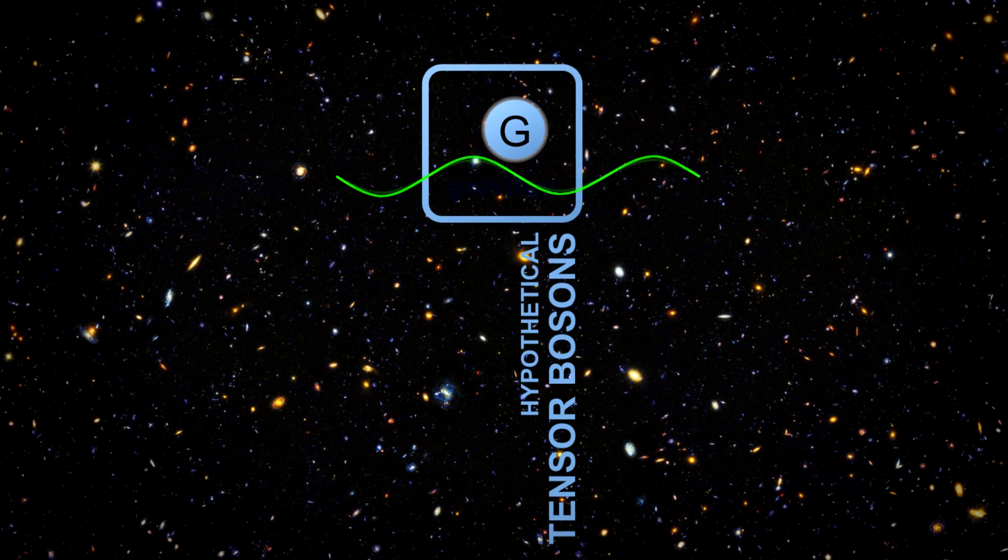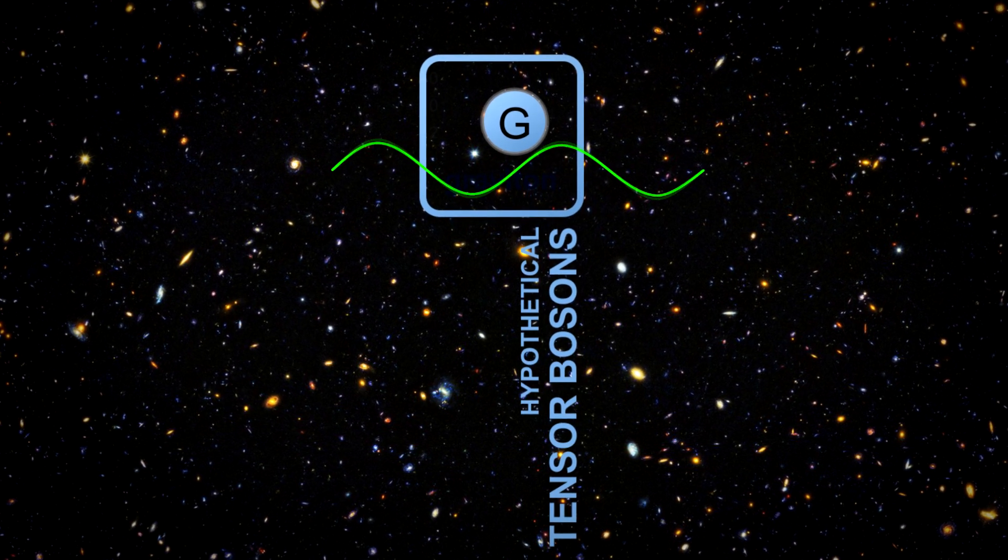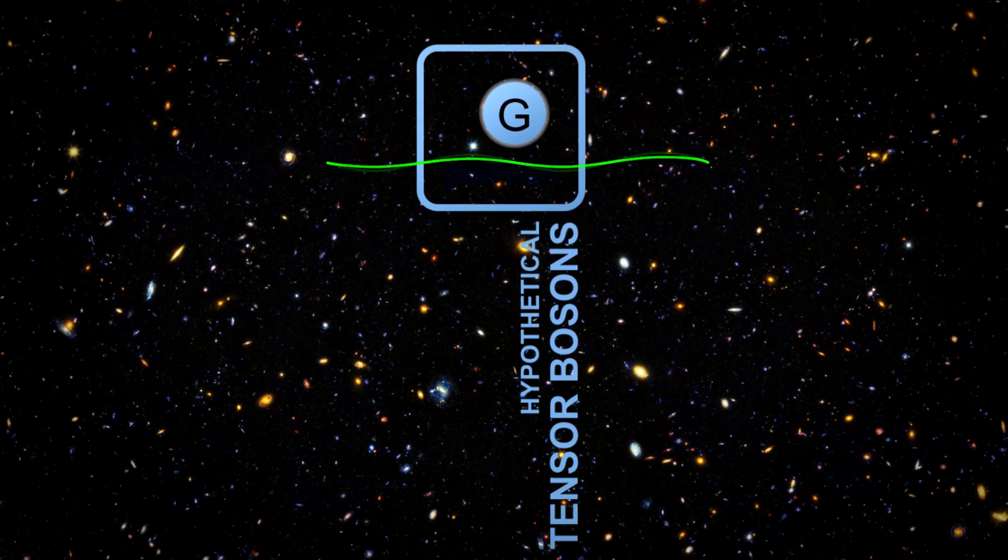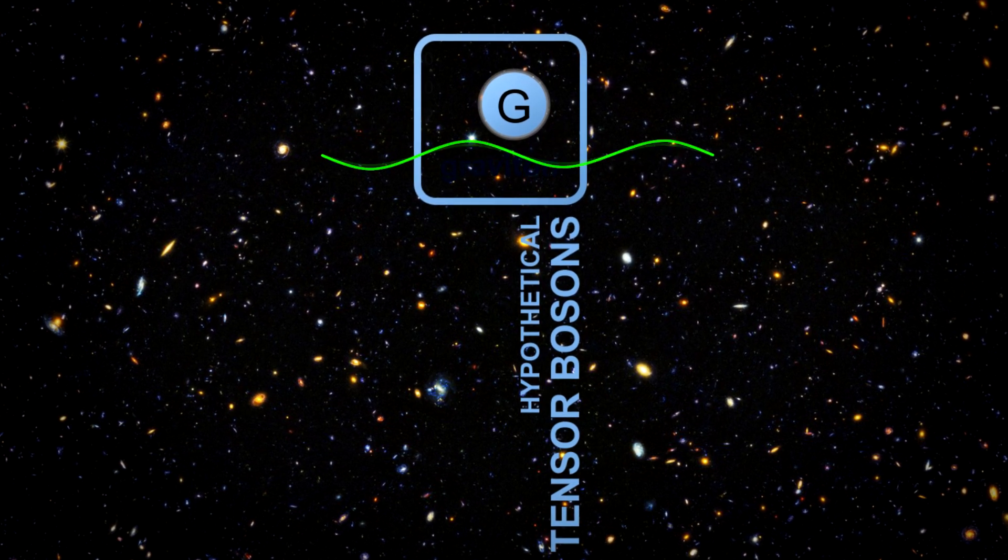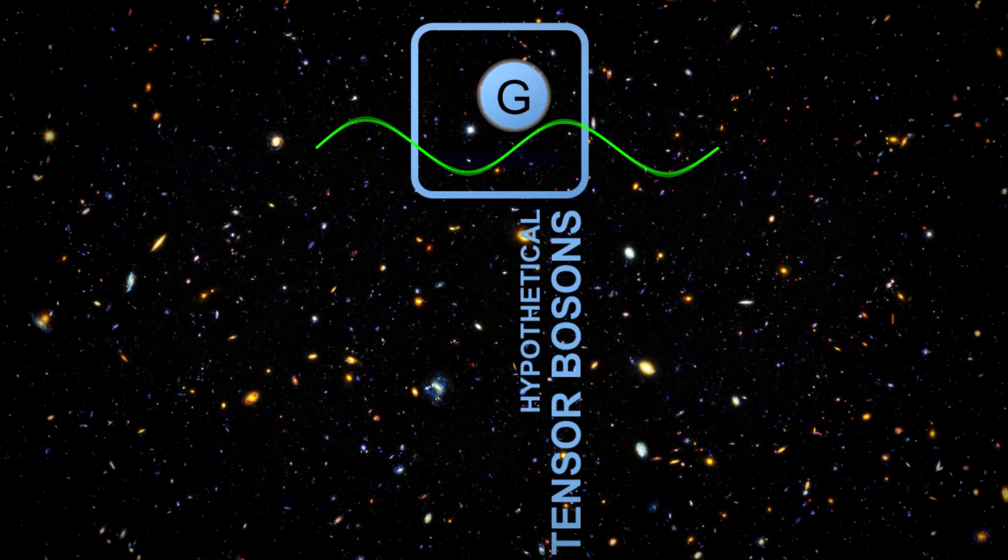a particle that has the properties of a graviton emerges from the mathematics of string theory. The graviton is a theoretical quantum particle that would carry the force of gravity, and this is the key to uniting the large and small worlds of physics.